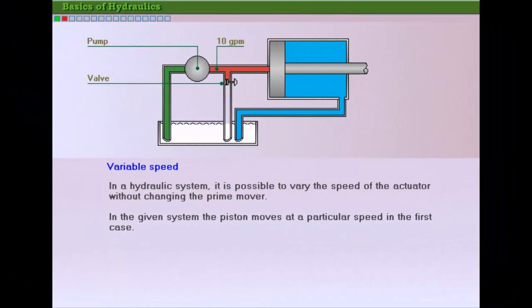An advantage of hydraulic systems is that they can easily be operated at variable speeds. Most electrical motors run at a constant speed. However, in a hydraulic system, it is possible to vary the speed of the actuator without changing the speed of the prime mover.